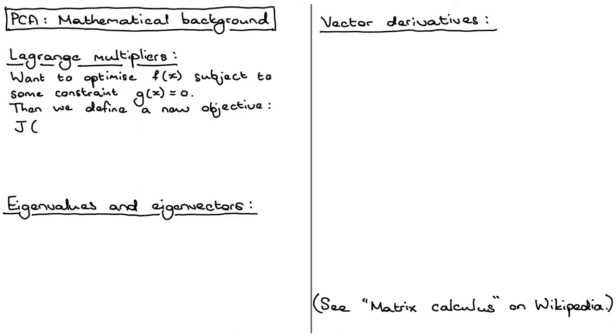So we've got J, our objective function. It's a function of x but also of a new variable, a scalar variable called lambda. And this is equal to f(x) plus lambda g(x), and you optimize this with respect to both x and lambda. So if we want to, for example, find the minimum of f(x), instead of just taking the derivative of f(x) with respect to x and setting that equal to zero,